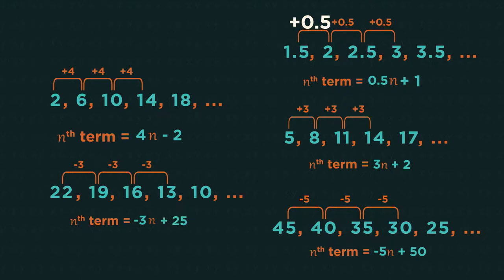From 0.5 to 1.5, you add 1. So there you have the nth term rule. Simple.